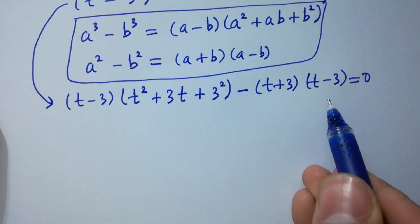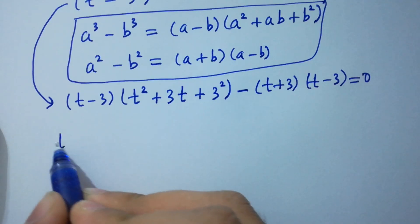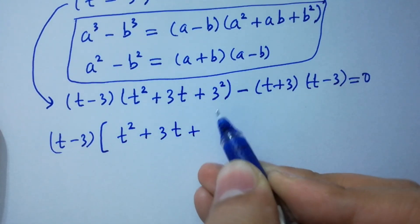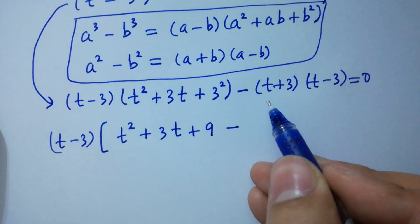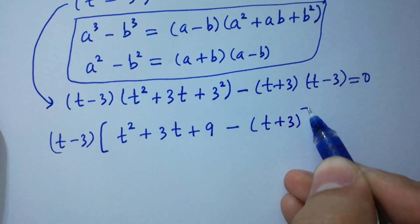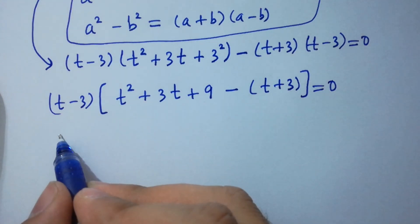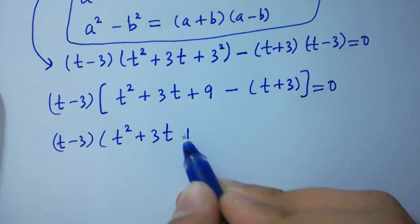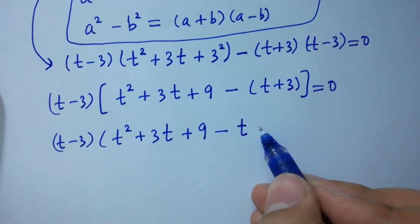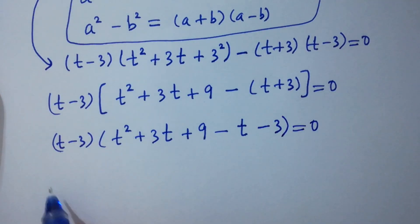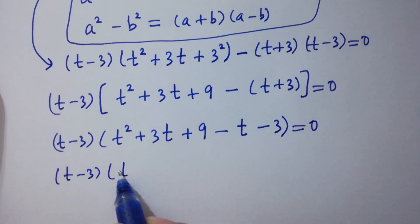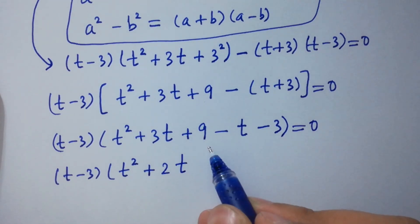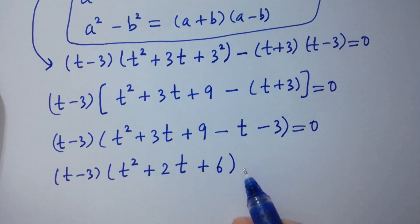Here (t minus 3) is common in both terms. Taking (t minus 3) out: (t minus 3) times [t squared plus 3t plus 3 squared minus (t plus 3)] equal to 0. Expanding: (t minus 3) times [t squared plus 3t plus 9 minus t minus 3] equal to 0, which gives (t minus 3)(t squared plus 2t plus 6) equal to 0.